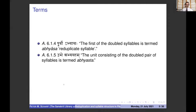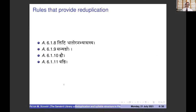Some terms are used in the discussion of reduplicated roots. Purvabhyasaha: the first of the doubled syllables is termed abhyasa. Ubhe abhyastham: the unit consisting of the doubled pair of syllables is termed abhyasta. The rules that provide the reduplication — including the first three sutras — are the 8th through 11th sutras: litidhattaranabhyasasya for the perfect; sanyangoh for the desiderative and intensive; shlau for the reduplicated present stems and Class III roots; and changi for the reduplicated aorist.